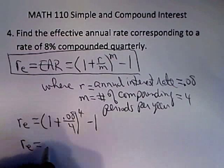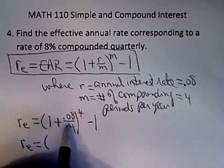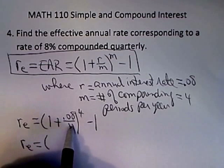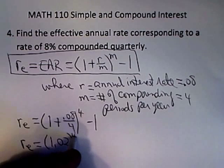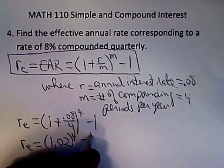Simplifying, then, we get the effective annual rate is .08 divided by 4 is .02, and when you add 1, you'll get 1.02. That quantity is raised to the fourth power minus 1.